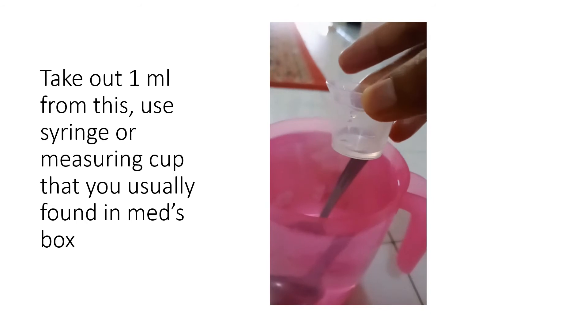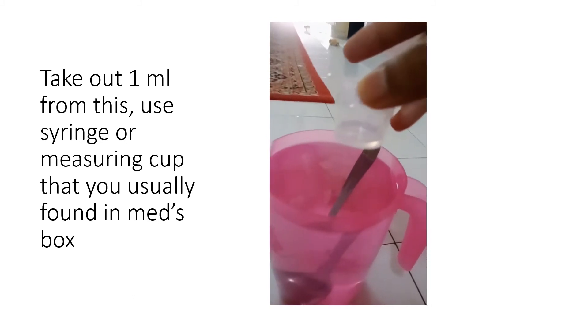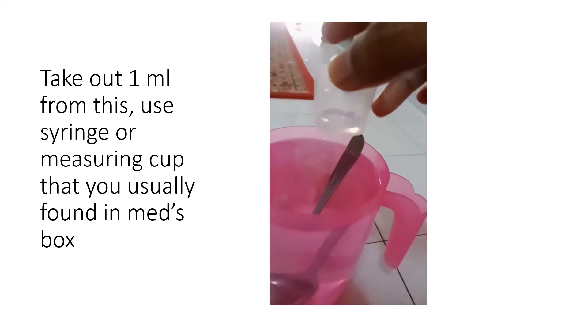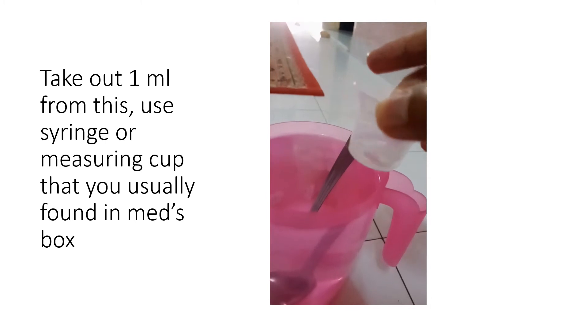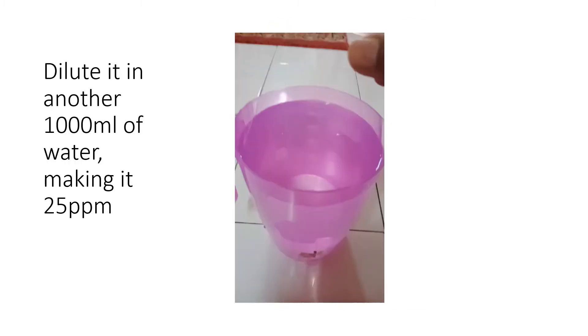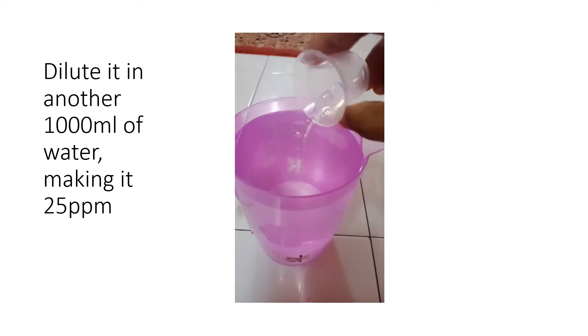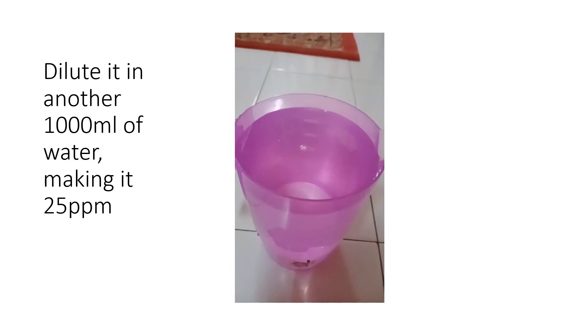I have already measured one milliliter of salt water using my medicine cup. Previously we dissolved 25 grams into one liter, which makes it 25 parts in 1000. I'm going to take 1 milliliter and dissolve it in another liter of water to make it 25 ppm. Drop 1 milliliter of the salt water into 1000 milliliters of water.